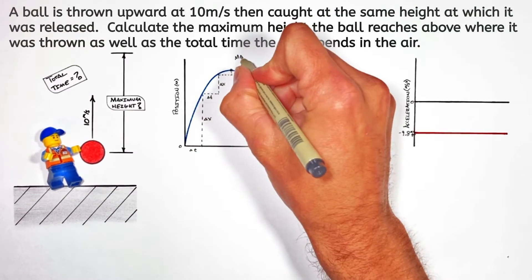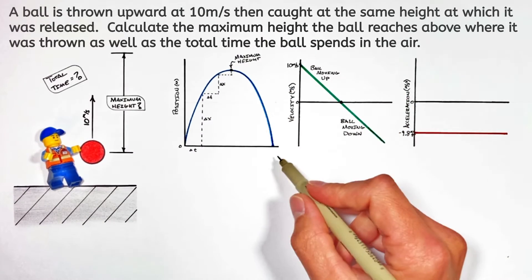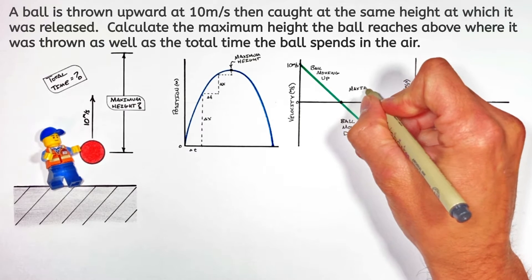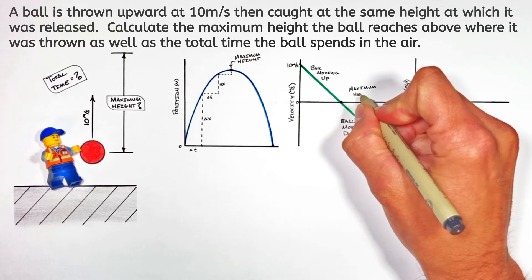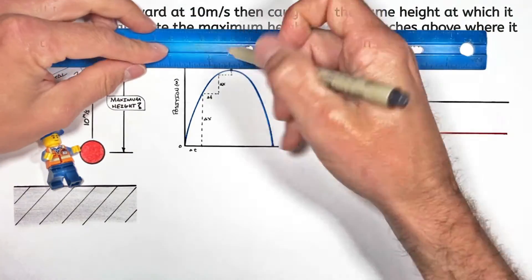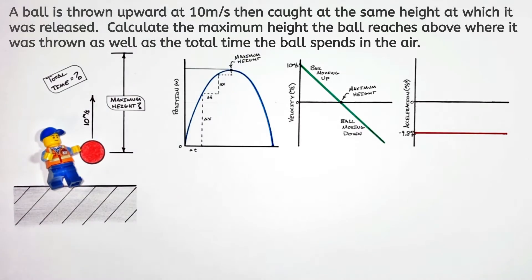It's pretty clear on the position versus time graph that this highest point is in fact the maximum height the ball reaches, but the trick in this entire problem is not looking at the position versus time graph but looking at the velocity graph and realizing the maximum height which the ball reaches occurs when the velocity of the ball is zero.